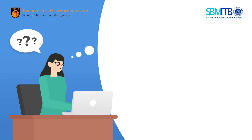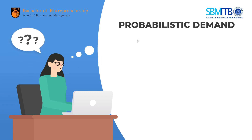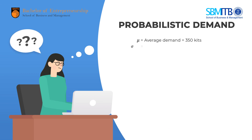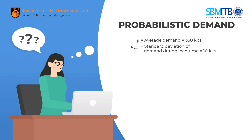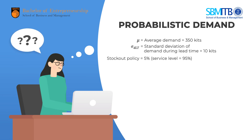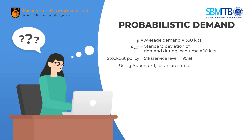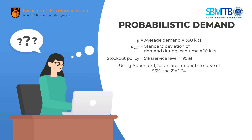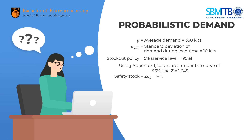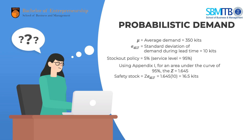Let's get back to how Linda avoids stockouts. Average demand for a t-shirt is 350 pieces, with a standard deviation of demand during lead time of 10 pieces. The stockout policy uses 5% stockout risk with a 95% service level. Using the Z-table for an area under the curve of 95%, Z equals 1.645. So safety stock equals 1.645 multiplied by 10, giving 16.5 pieces.